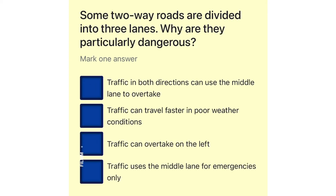Some two-way roads are divided into three lanes. Why are they particularly dangerous? Traffic in both directions can use the middle lane to overtake. Traffic can travel faster in poor weather conditions. Traffic can overtake on the left. Traffic uses the middle lane for emergencies only.